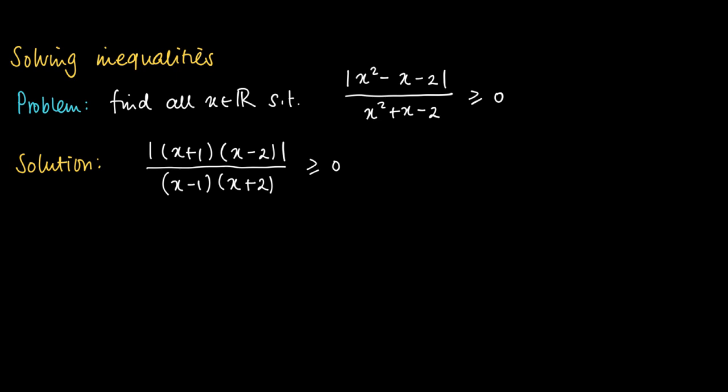So look at the numerator, and we see that the numerator is 0 at minus 1 and 0 at 2. And for the rest, we see that it concerns an absolute value, so the sign of the numerator outside minus 1 and 2 is strictly positive.